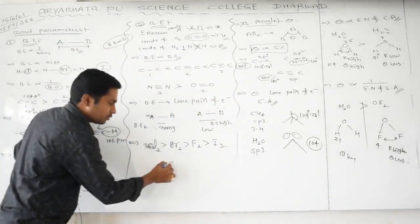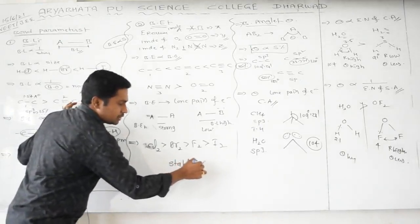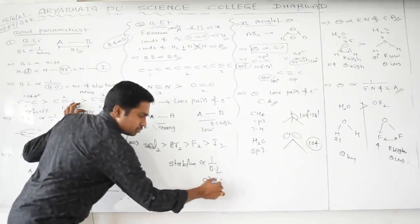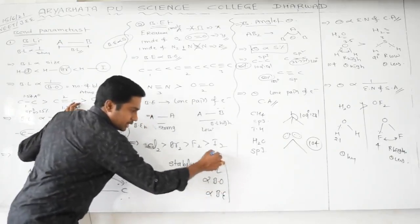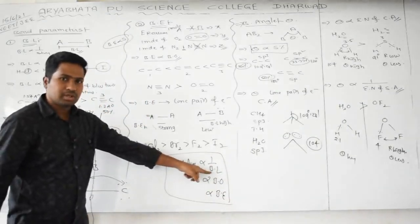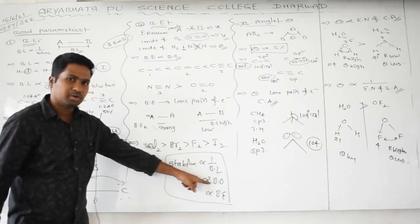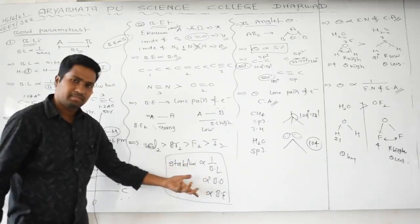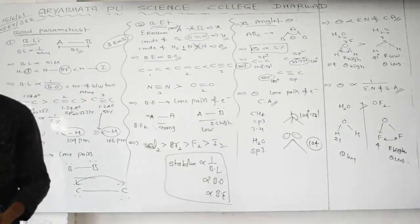To summarize: stability of a molecule is inversely proportional to bond length and directly proportional to bond order and bond energy. Less bond length means more stable; more bond order means more stable; more energy required to break means a stronger, more stable bond.